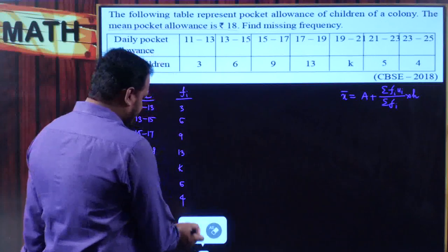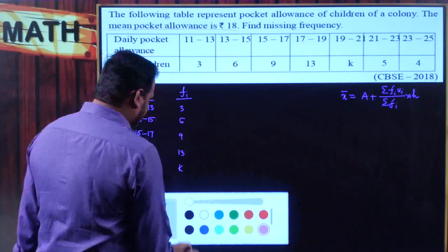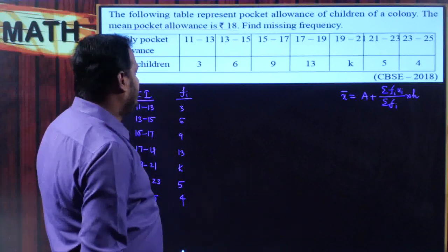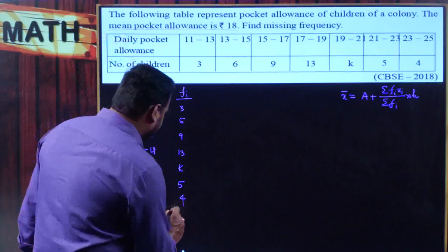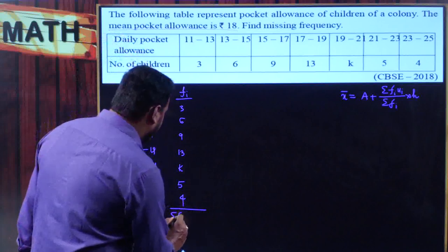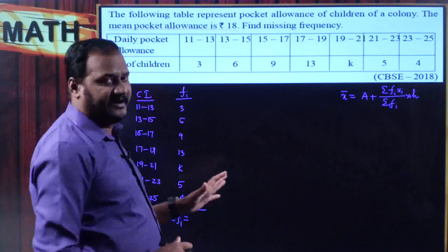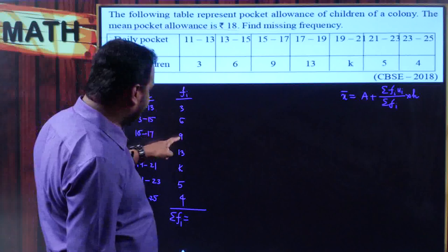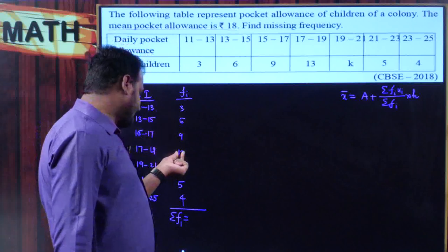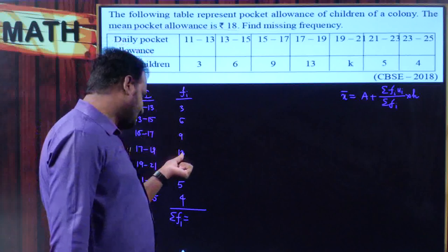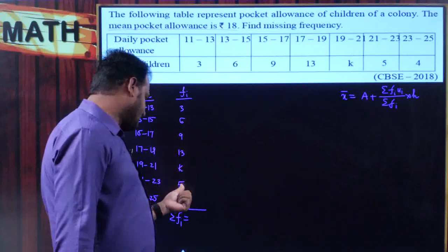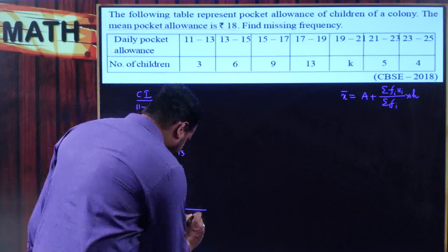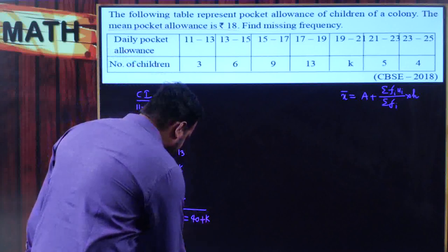Now I will find Σfi. Adding all frequencies: 3+6=9, 9+9=18, 18+10=28, 28+3=31, 31+9=40. So Σfi = 40 + k.